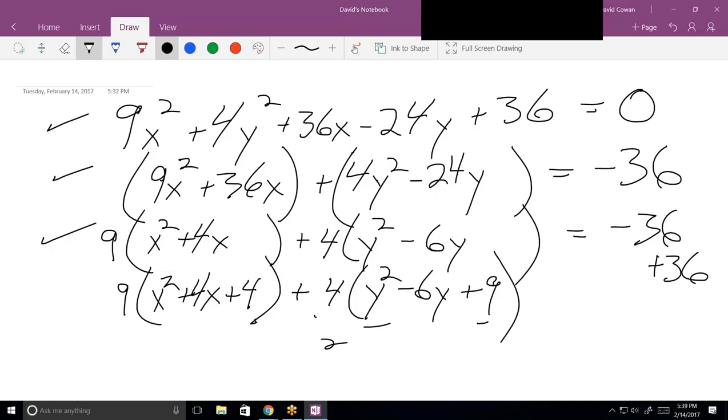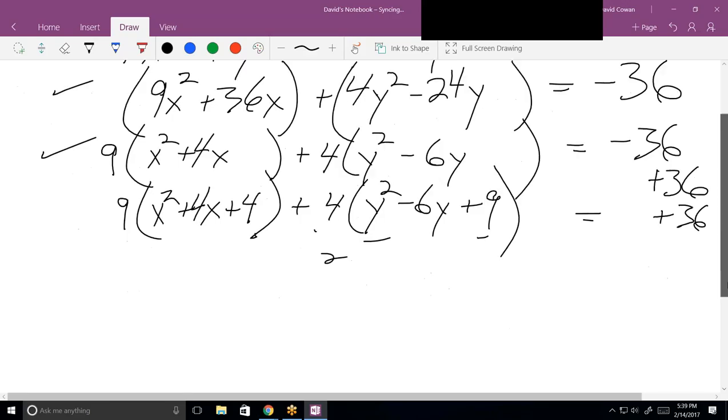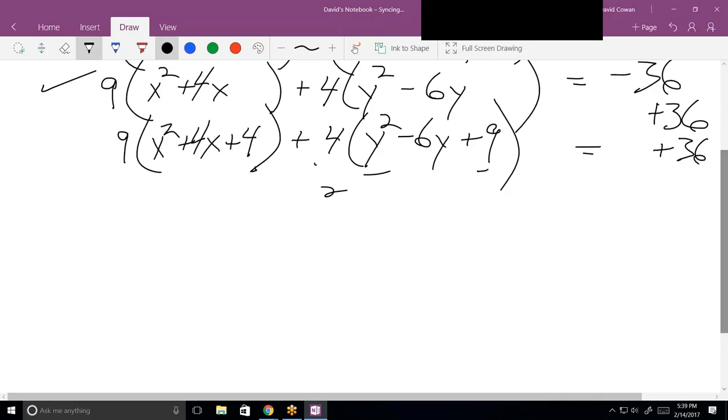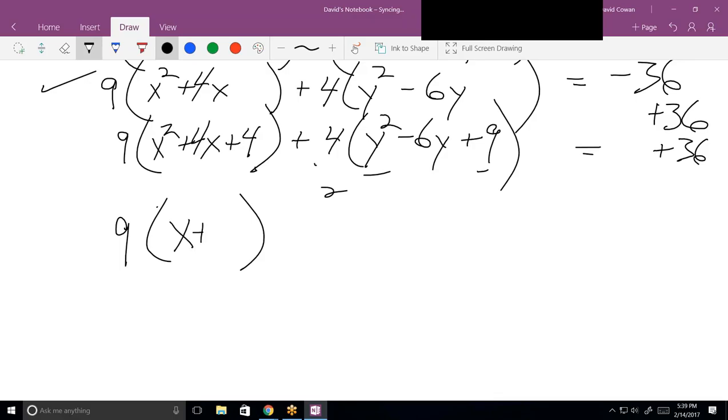And the rest of it? Y squared minus 6Y plus 9. It's always plus, even if it were a negative number. So now, let me make some space here. How can I represent that as a linear factor squared? X plus 2 squared and then 4 times Y minus 3 squared. And what's on the right side now? Next step?